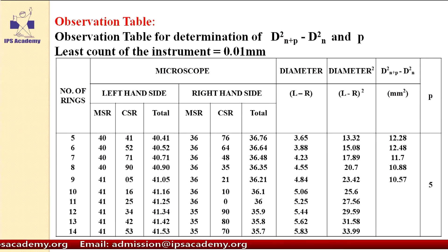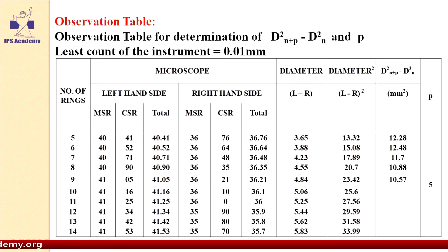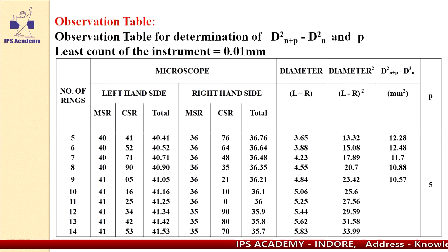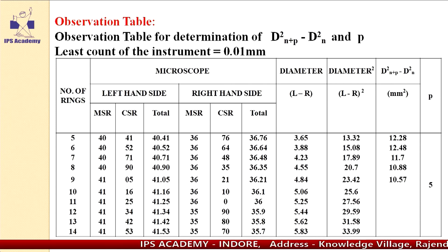This is the observation table. The left-hand region shows the ring numbers from fifth to 14th. One portion shows the microscope reading — left hand and right hand side. In the left hand side column you can see MSR, CSR, and total reading. MSR is the main scale reading, CSR is the circular scale reading, and total reading is calculated with the help of least count. Least count is multiplied by CSR and added to MSR. Least count is 0.01 mm.